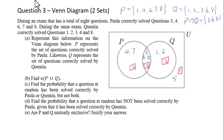For part b, find n(P ∪ Q). We add all three regions together: 2 plus 3 plus 2 equals 7. For part c, find the probability that a question chosen at random has been solved correctly by Paula or Quentin, but not both. The questions solved by one but not both are 4 questions, so 4 over 8 equals 1 over 2.